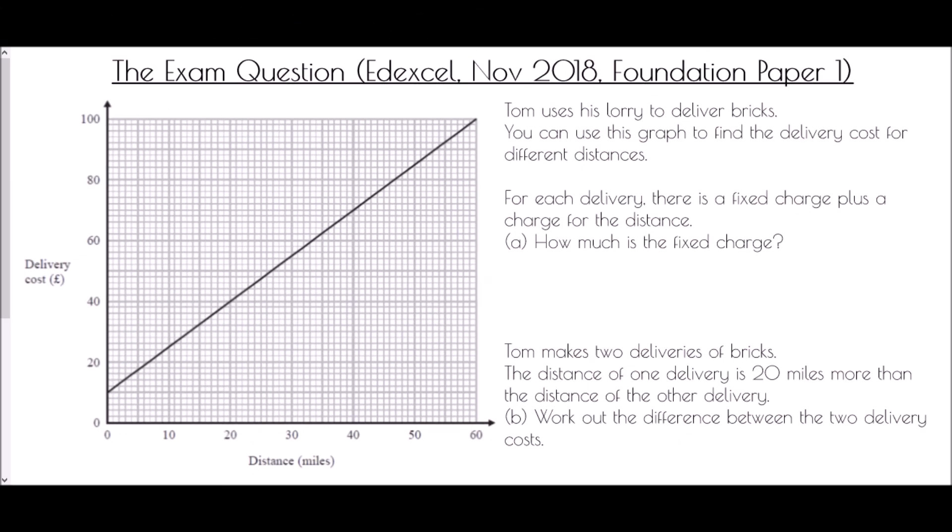Edexcel November 2018 Foundation Paper 1. Tom uses his lorry to deliver bricks. You can use this graph to find the delivery cost for different distances. For each delivery, there is a fixed charge plus a charge for the distance. How much is the fixed charge? There's our keyword: fixed charge, meaning the amount we would pay regardless of how far we're delivering the bricks. That comes from our y-intercept - the amount we would charge even for zero miles. In this case, that value is £10.